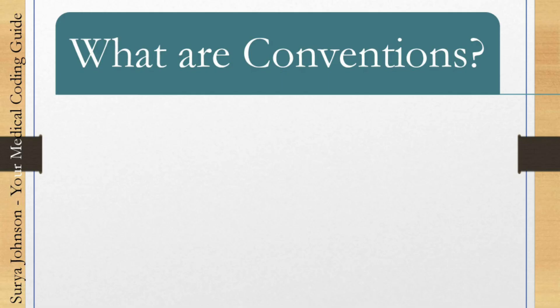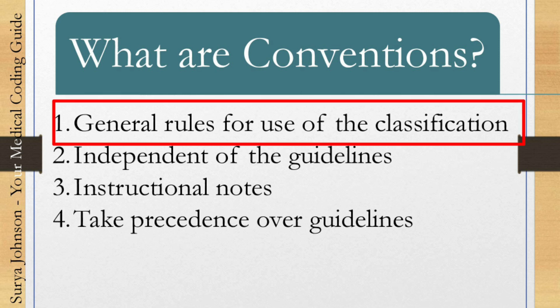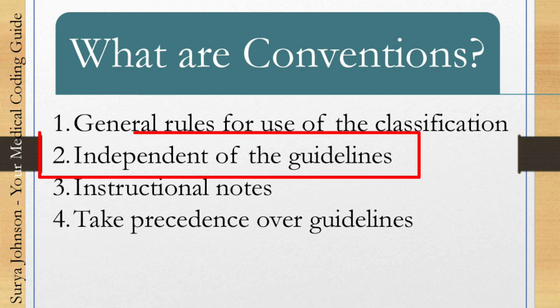What are conventions? Conventions are general rules for use of the classifications — the diseases are classified into ICD-10-CM. These are the general rules to understand and define the classification. They are independent of the guidelines, meaning they will not modify or change themselves according to the guidelines. They are always standalone; they aid the guidelines but do not depend on or modify according to them.